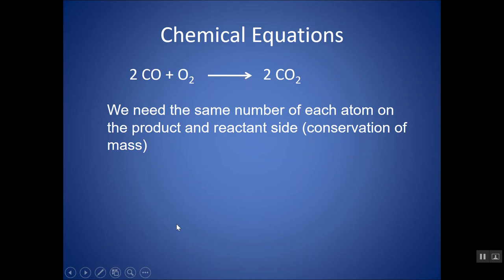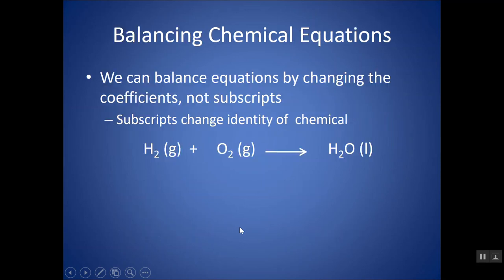You always need to have conservation of mass. So you need the same number of each type of atom on each side of your chemical reaction. For instance, I have two carbons on the left, so I need two carbons on the right. I have four oxygens on the left, and I need four oxygens on the right. So your atoms are just rearranged. We are not creating or destroying mass or matter.